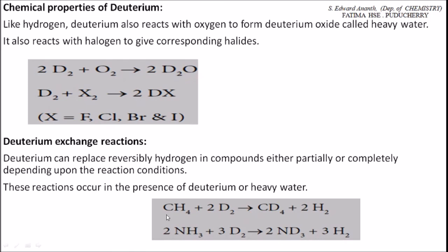For example, methane CH4. When it is treated with deuterium, deuterium replaces the hydrogen atoms. So it replaces the position of hydrogen in methane to form CD4 plus H2. Hydrogen gas is liberated.